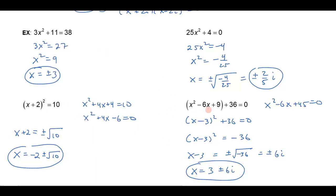What we're getting at with these two examples is: if I have a quadratic equation I'm unable to solve, and if I could somehow work backwards to make it look like something squared equals a number, then I could extract the square roots and solve it. We're going to exploit that idea in our next section, where we look at solving quadratic equations by a technique called completing the square.